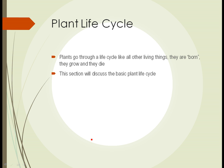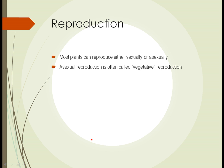Now we'll talk about the entire life cycle of a plant. Plants go through a life cycle like all other living things — they're born, essentially, they grow, and eventually they die. There can be some differences, especially on the reproductive end: some plants reproduce vegetatively rather than through seed. Most plants have the ability to reproduce either sexually or asexually.